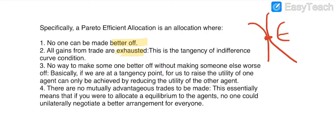The tangency point is obtained when both indifference curves become tangent, giving us the equilibrium point. Third, the utility of one agent can only be increased by reducing the utility of the other agent. Fourth, we can call it mutually advantageous trade, because even when equilibrium is allocated to the agents, there will be unilateral negotiations leading both to make trades that reach the possible equilibrium.